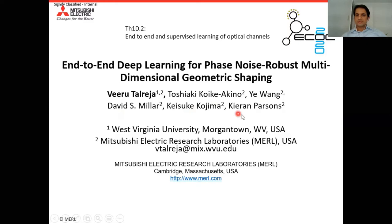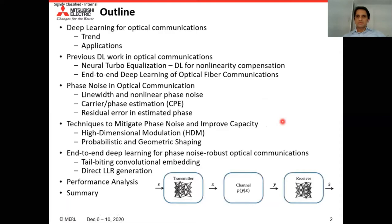Next, let's go to the outline. I'm going to talk about deep learning trends and applications, some previous deep learning work in optical communication, discuss phase noise in optical communication and techniques to mitigate phase noise and improve capacity, then cover the proposed method — end-to-end deep learning for phase noise in optical communication — and end with performance analysis and summary.